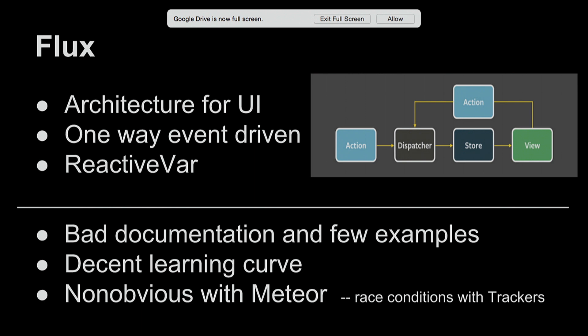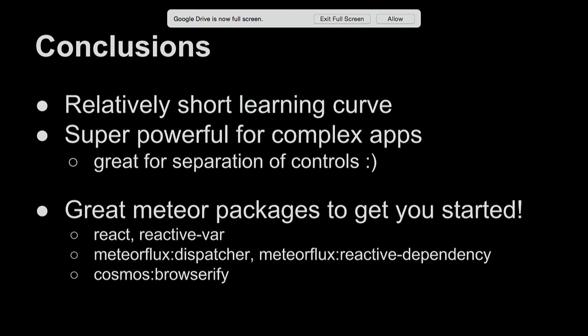There's a decent learning curve and it's not very obvious with Meteor. I ran into a bunch of race conditions when using trackers as an example. But some things that are really nice about Meteor is that you have this reactive data, so you don't have to do a lot of things to check when data is changing — data just changes. The way React works with Meteor is so nice; it just asks whether it should be changing a React component or not, and you just say yes. Reactive variables were my friends when building this app. There are also a bunch of really great Meteor packages to get you started if you want to use Flux — some of those include Meteor Flux, which is a wrapper around the dispatcher that Facebook puts out.